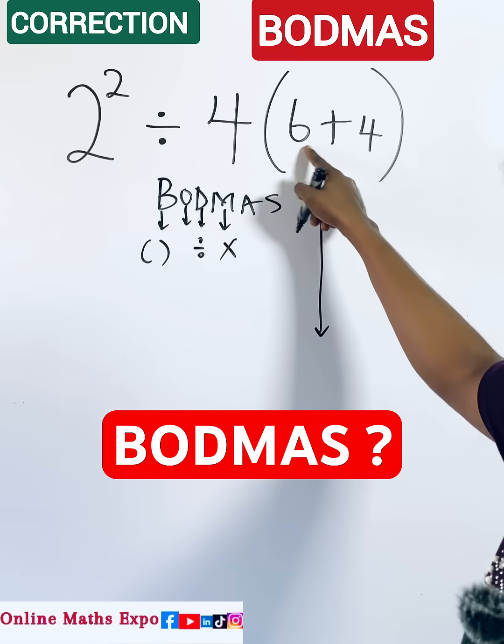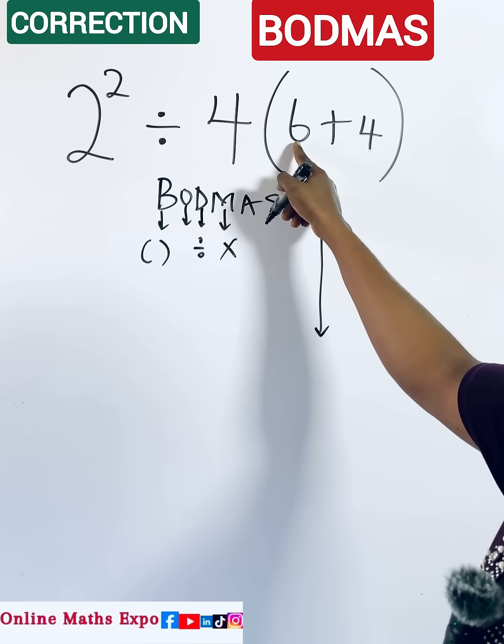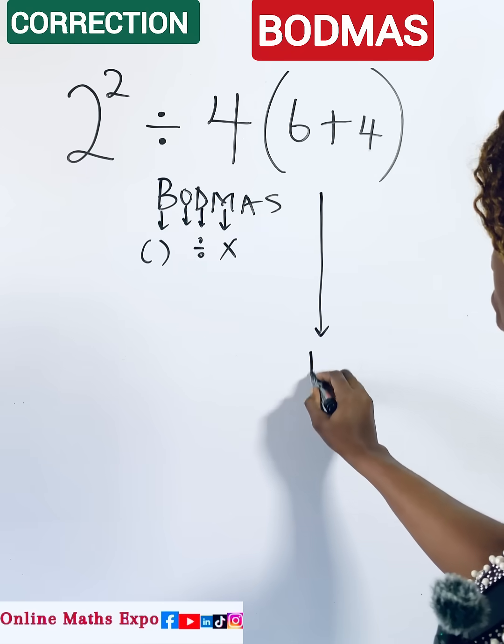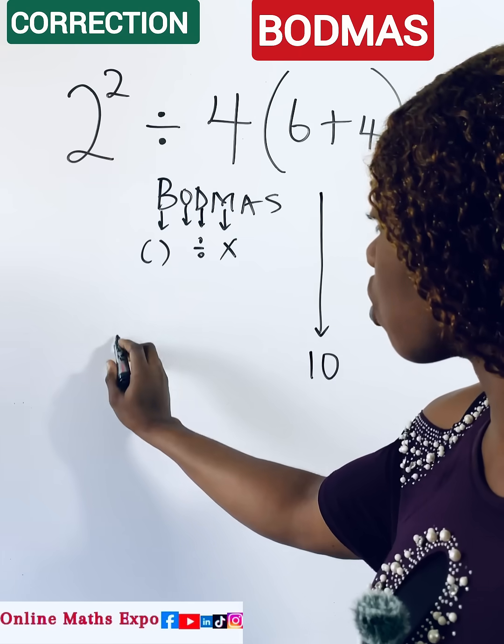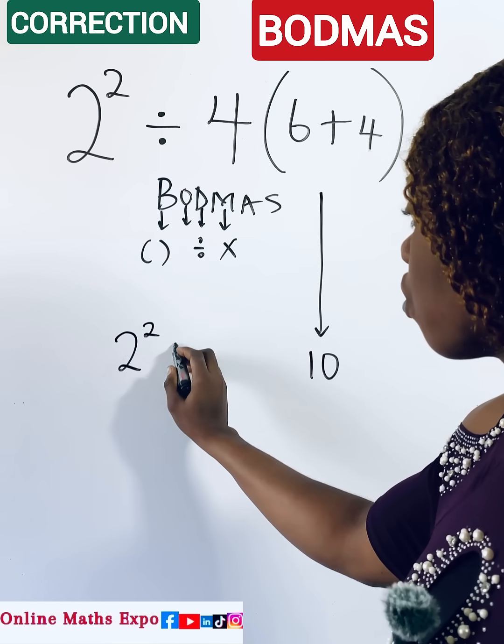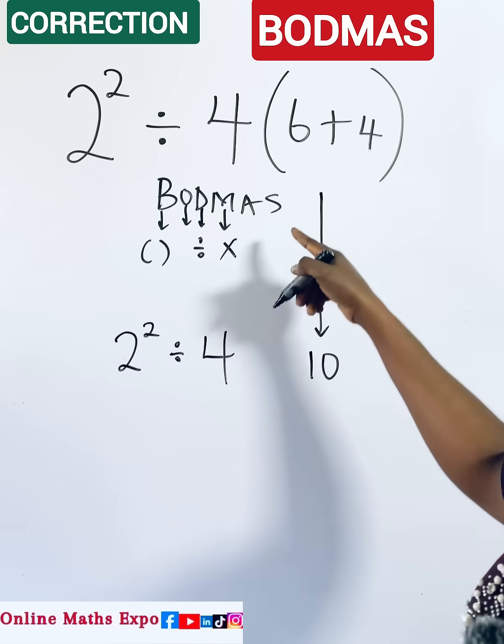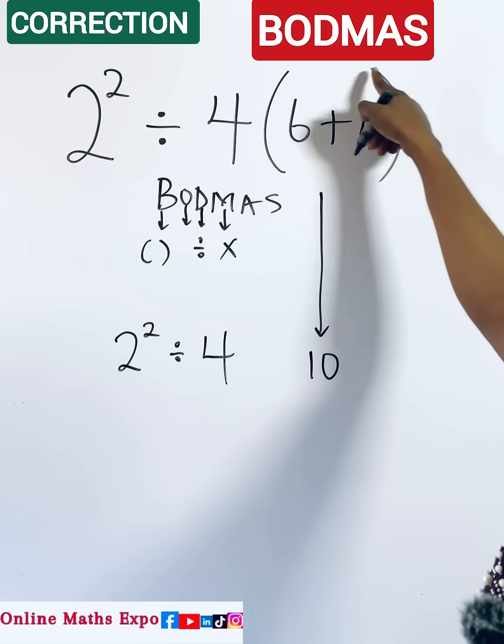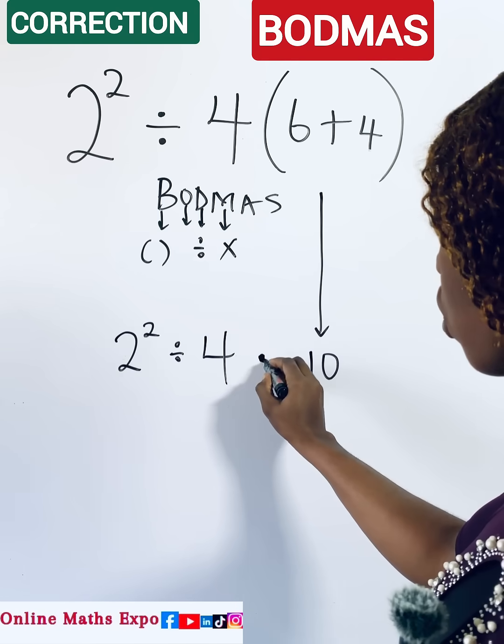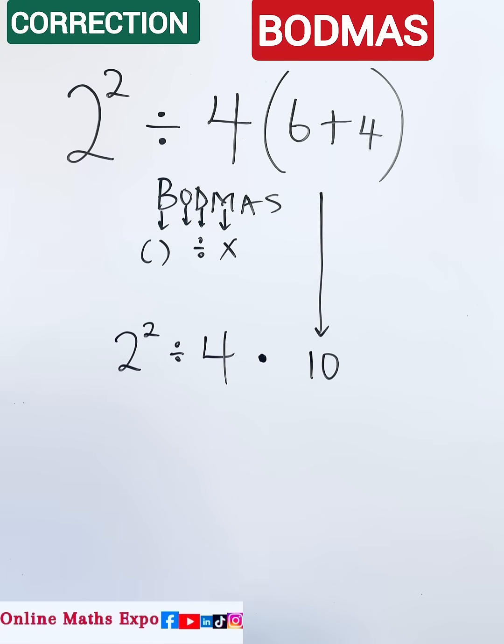With this, you are going to add these two in the brackets. So when you add 6 and 4, it gives you 10. So bring down this, you have 2² divided by 4. Now remember that when you are trying to remove the bracket, it turns to multiplication. Did you see? Now what do...